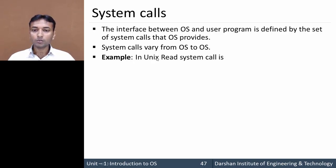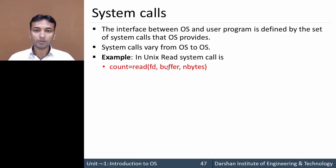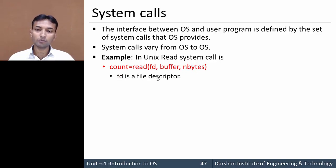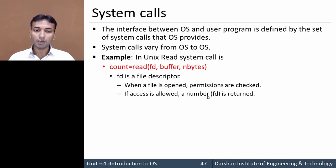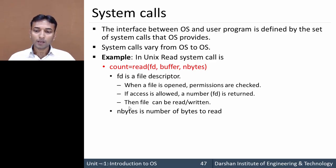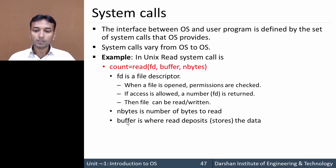Let's take an example. In Unix the read system call is like: count = read(fd, buffer, nbytes). Here fd is a file descriptor, that is a unique ID of a file. When a file is opened, permissions are checked; if access is allowed, the fd number is returned, otherwise it gives an error. Then the file can be read or written. nbytes is the number of bytes to read, and buffer is where the read deposits or stores the data.